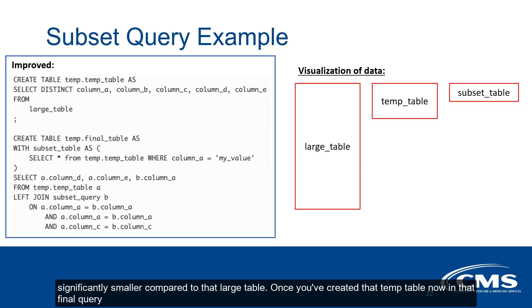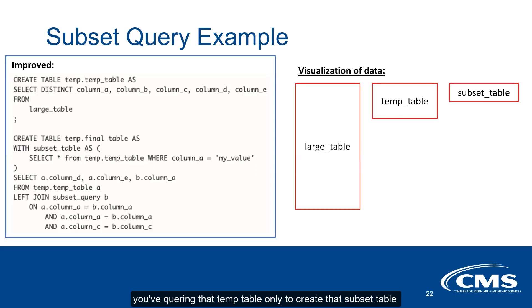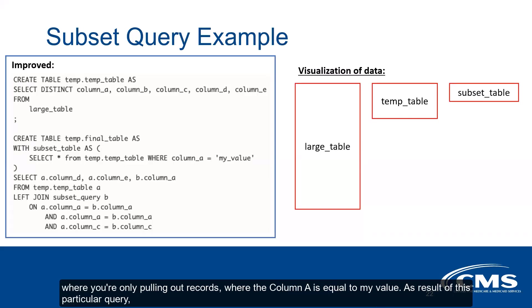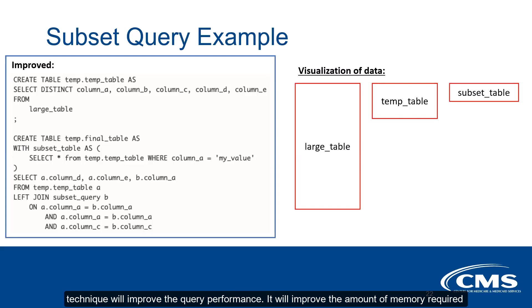Once you've created that temp table, now in that final query, you're querying that temp table only to create that subset table where you're only pulling out records where column A equals 'my value'. As a result of this particular query, you are only doing a join against the temp table and the subset table itself. This particular technique will improve the query performance, improve the amount of memory required to run that query, and overall just make it much more resilient running on the cluster.